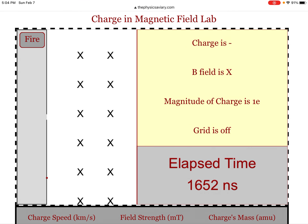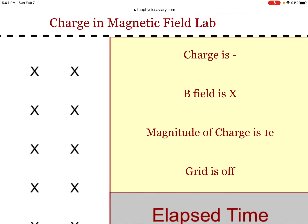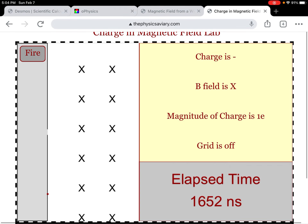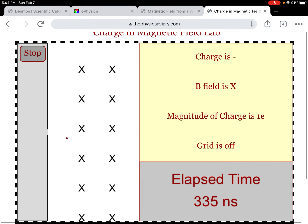Here is a magnetic field pointing into the page — you can see the X's. I'm going to fire a negative charge and see what happens.